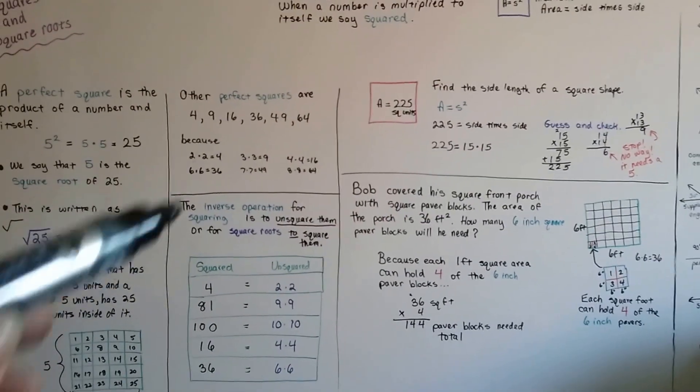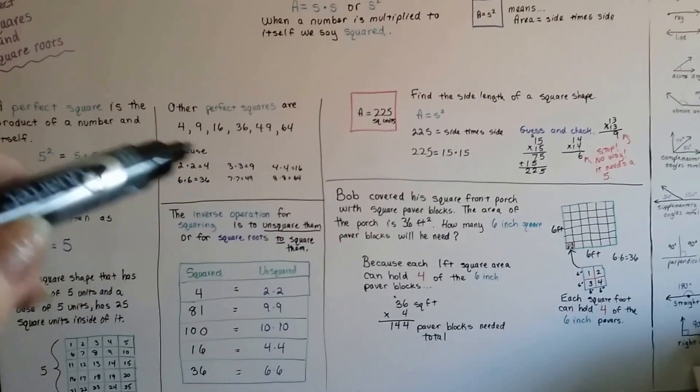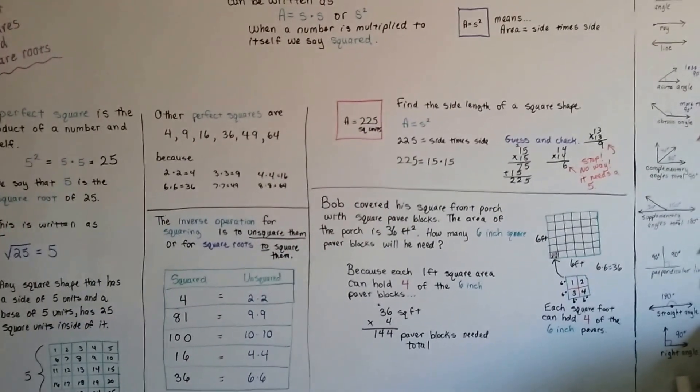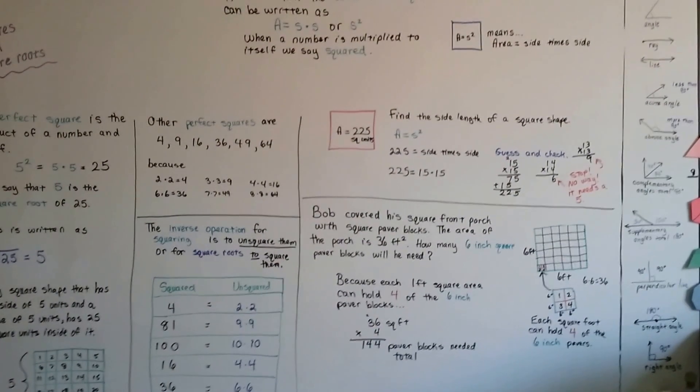So we discussed perfect squares and how they work out perfectly when you multiply 5 times 5 or 9 times 9 or 10 times 10. But what happens when they're not perfect?